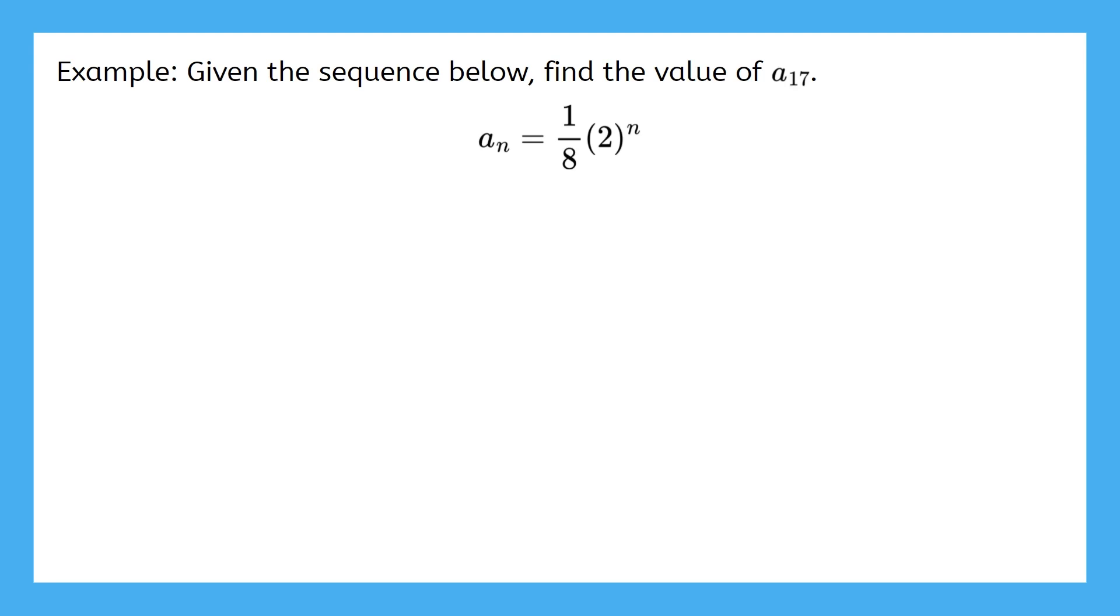Okay, let's substitute in n equals 17. Then a17 equals 1 eighth times 2 to the 17th power. Wow. That is a big number. If you calculate 2 to the 17th, we get 131,072. We multiply that by 1 eighth, we get 16,384. Our answer is really big. We were able to get it with just a few steps.